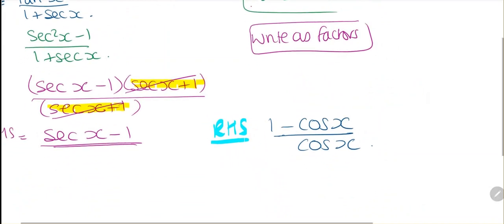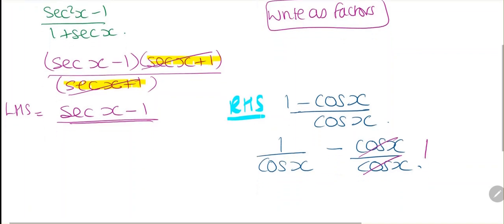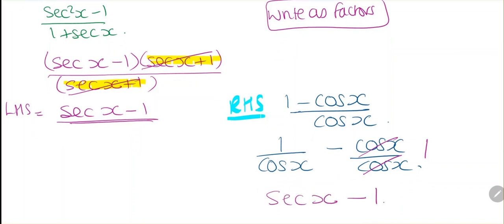I can rewrite these fractions — I'm going to write them both over cosine x as separate fractions. When I do this, this becomes one, and one over cosine x we know is secant x, so we have secant x minus one. On the left hand side we have secant x minus one, and on the right hand side we have secant x minus one, so we have verified that they both are equal.